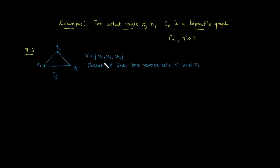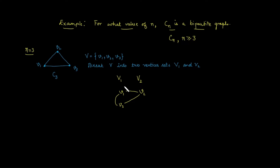Let's try to break the vertex set of C3 into disjoint sets V1 and V2. Place vertex V1 in set one. V1 is adjacent to V2, and V2 is adjacent to V3, but V3 is also adjacent to V1. As per the condition of a bipartite graph, no two adjacent vertices can be in the same set, but here V1 and V3 end up in the same set. Therefore C3 is not a bipartite graph.